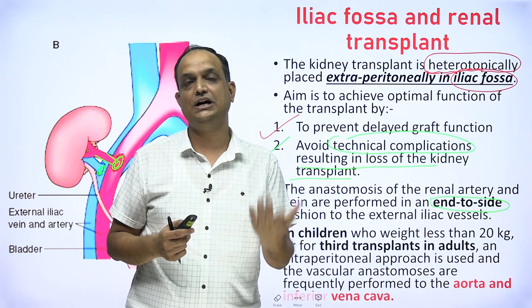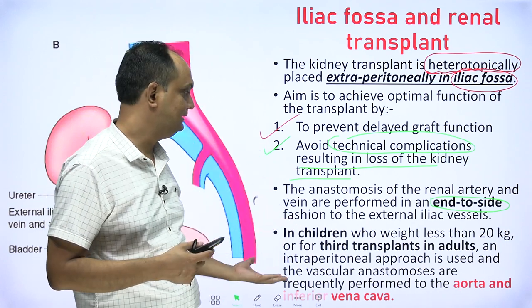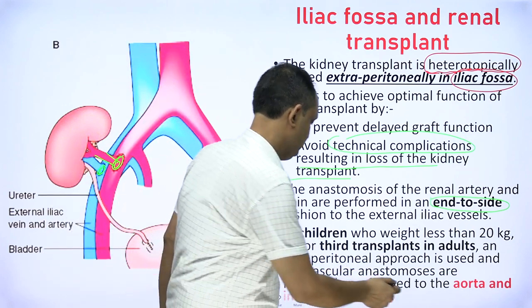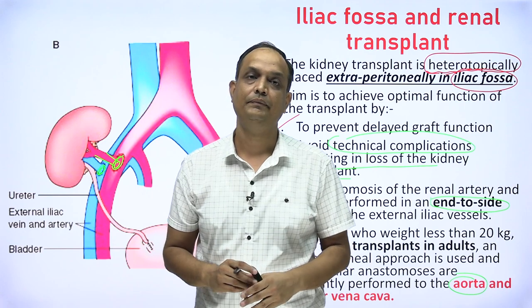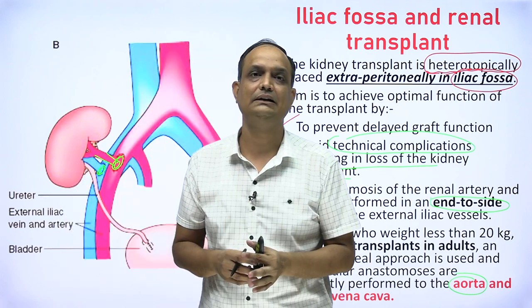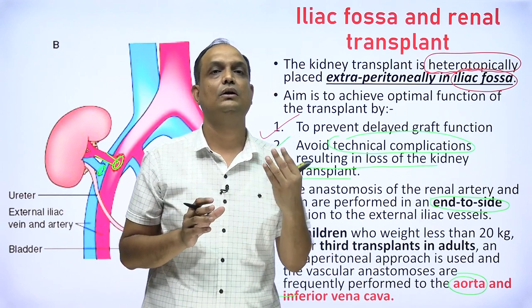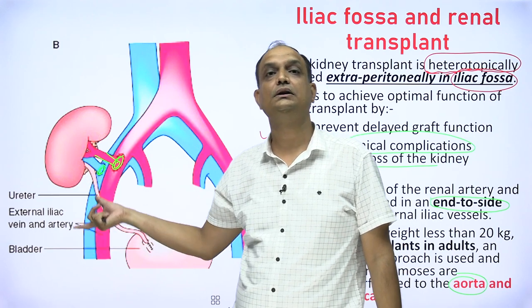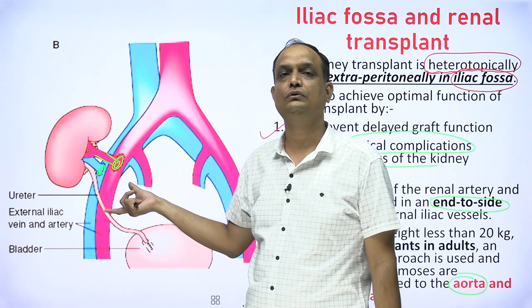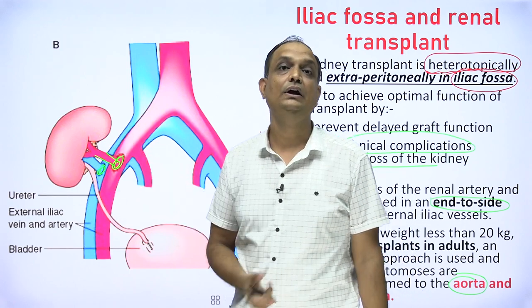In children, the aorta and inferior vena cava are used for anastomosis rather than the iliac vessels. This is a commonly asked exam question: why are kidneys transplanted in the iliac fossa? The answer is to ensure fast functioning of the donor kidney using the common iliac vein and artery. At the end of this class, you should understand how to divide the nine abdominal regions, their clinical importance, and the lines that form them.